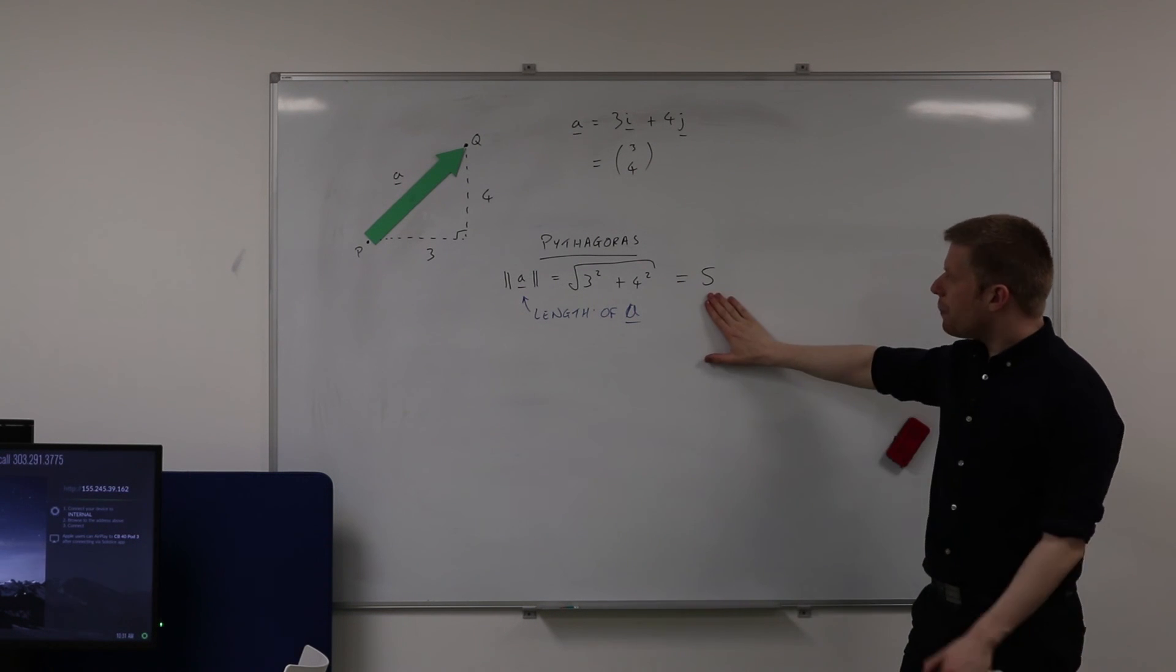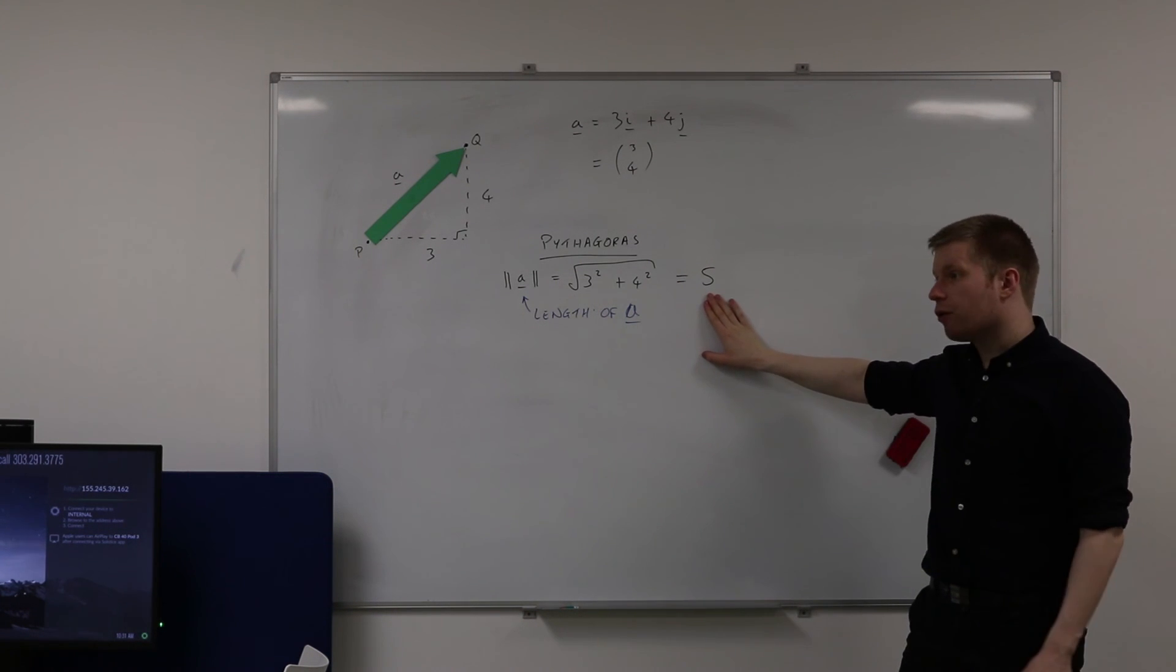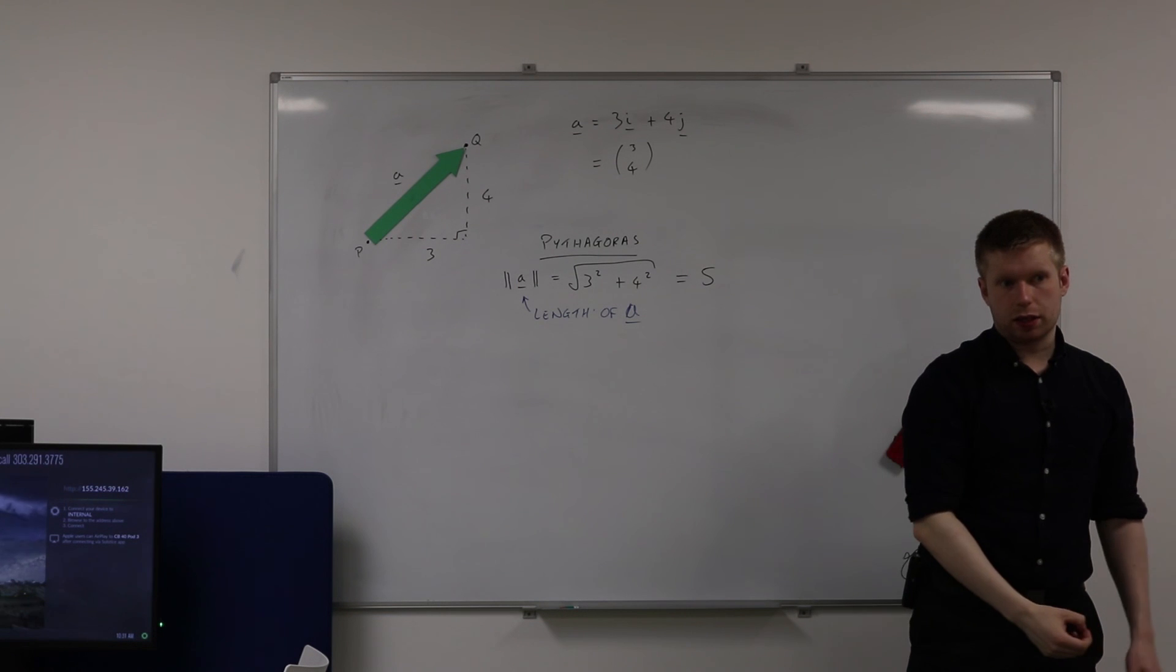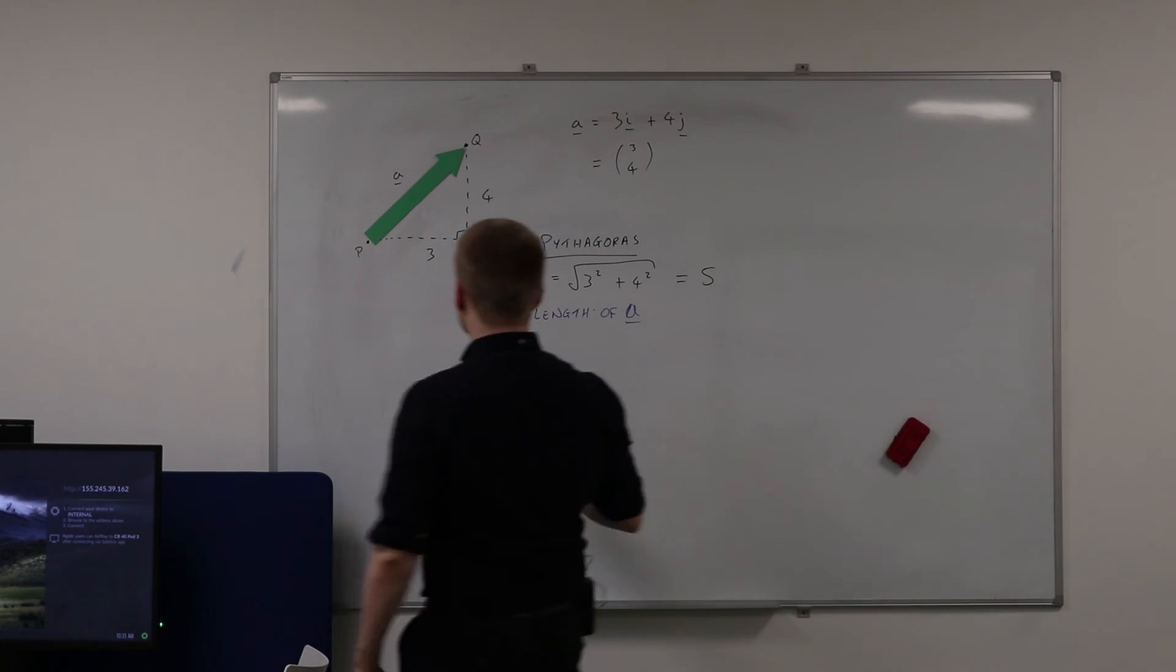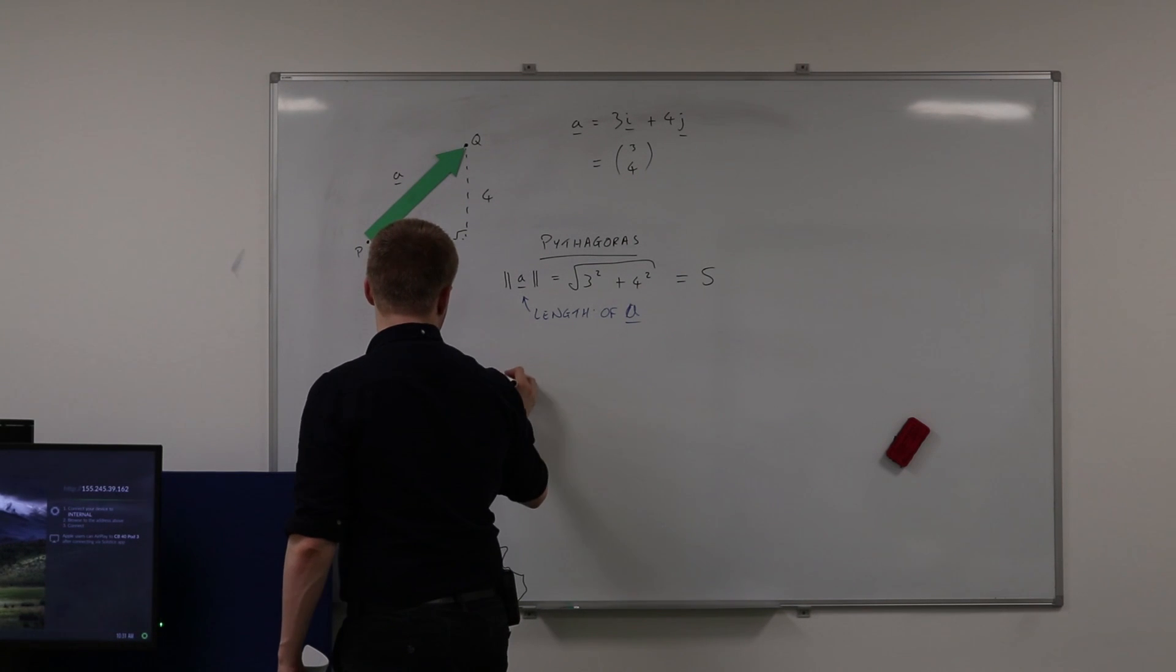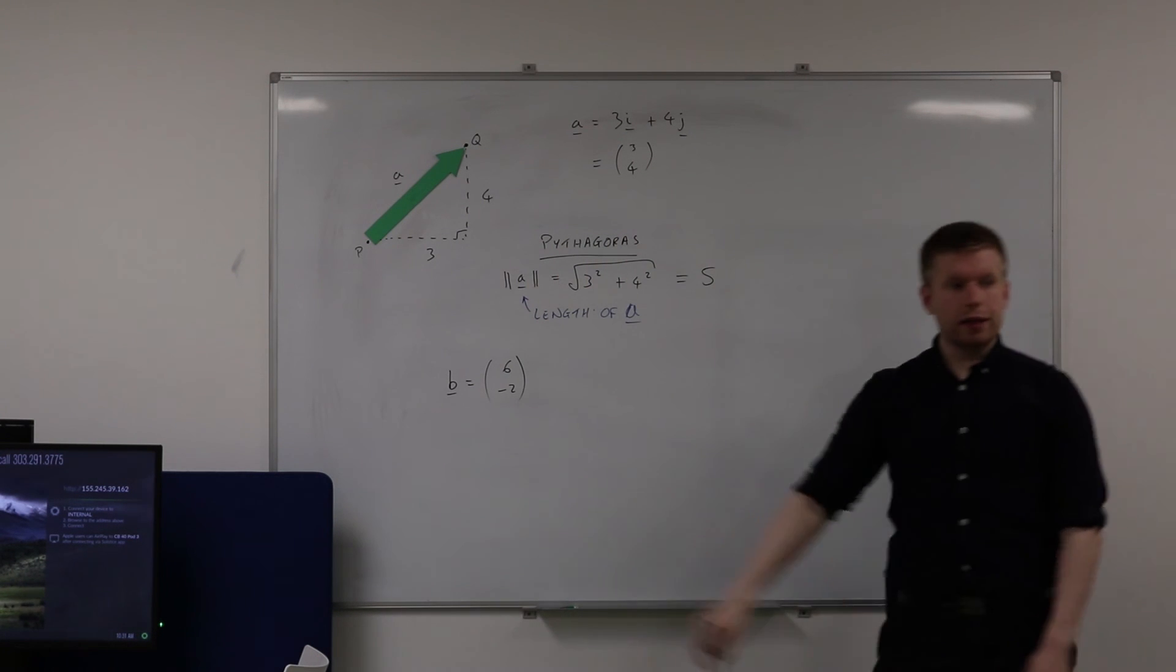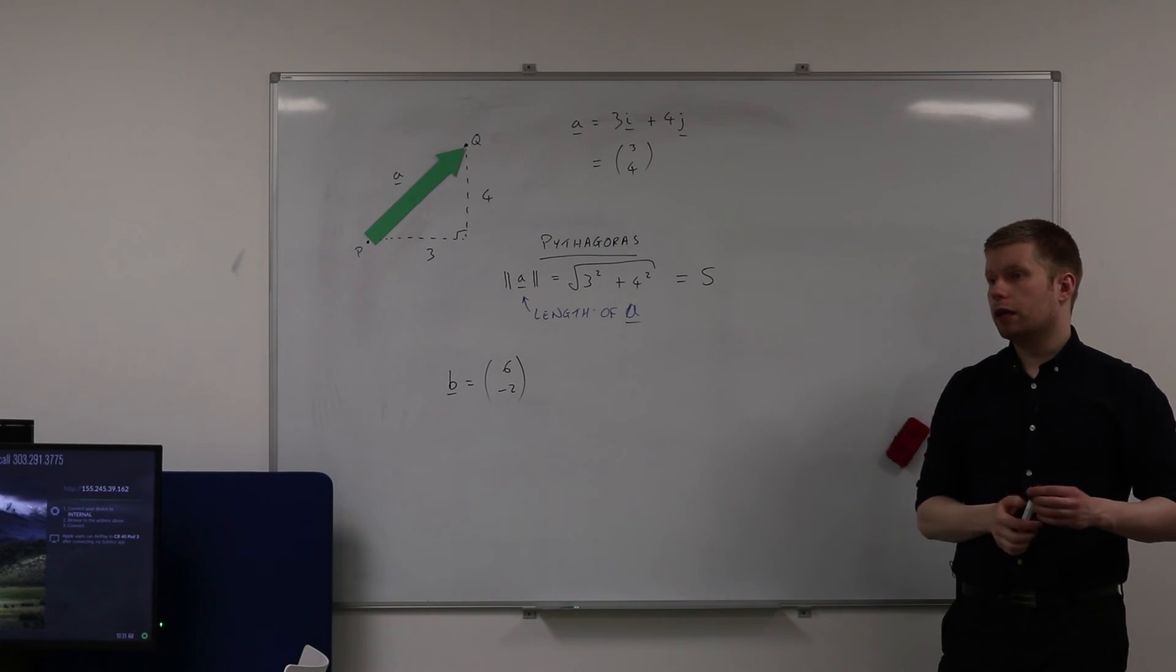So are you happy that what I'm doing here I can use Pythagoras to find the length of a vector? Could you have a go? If I give you that b is equal to six, negative two, could you have a go at finding the length of b?